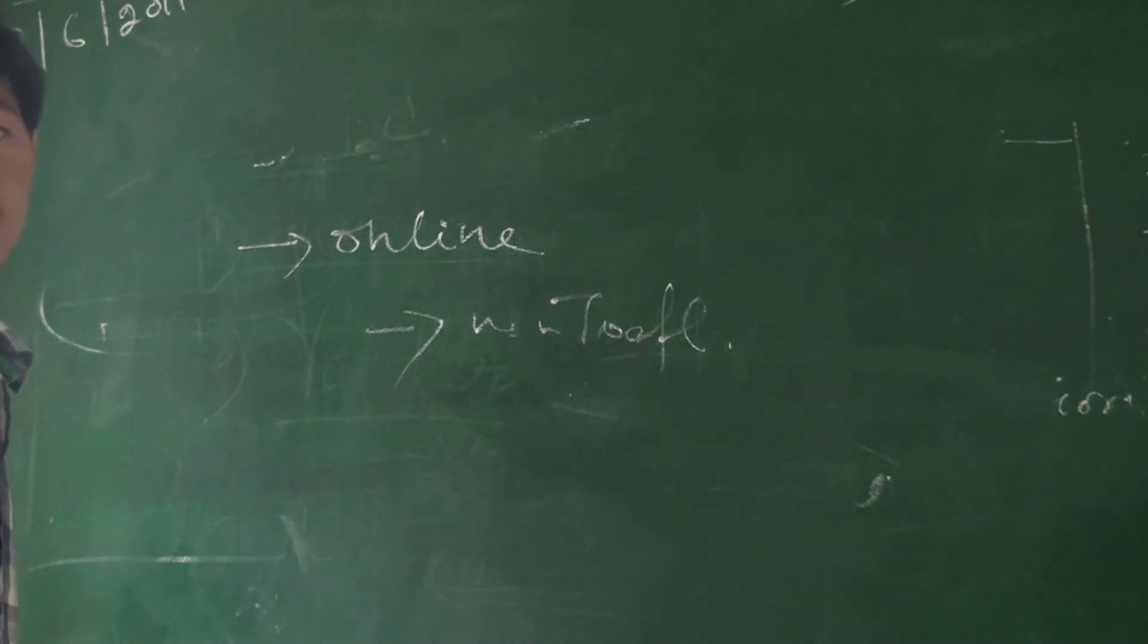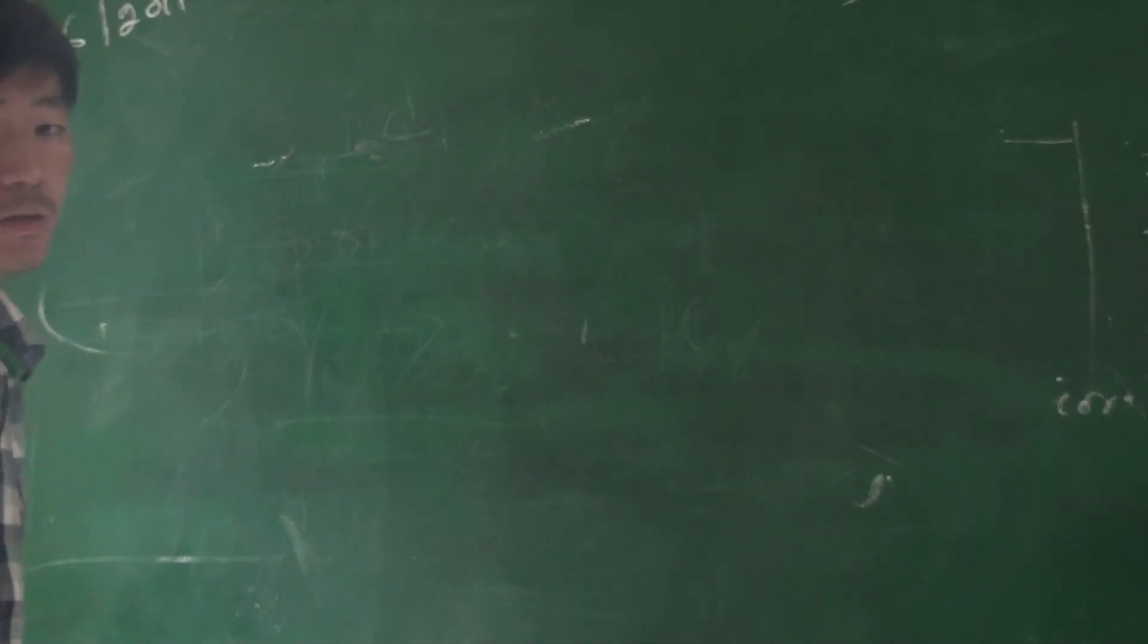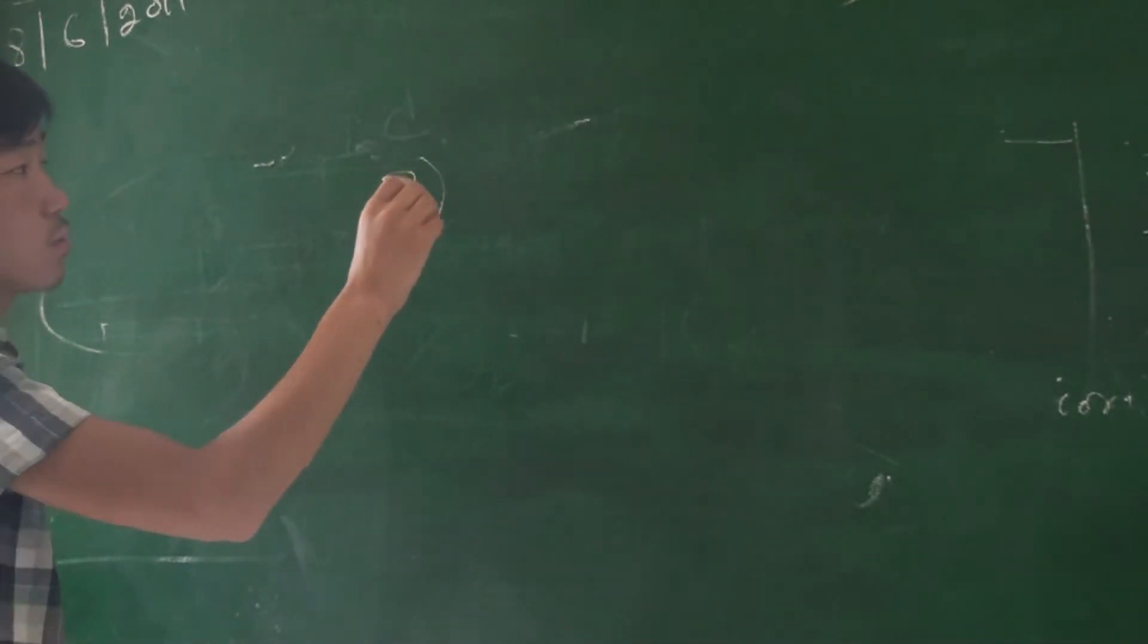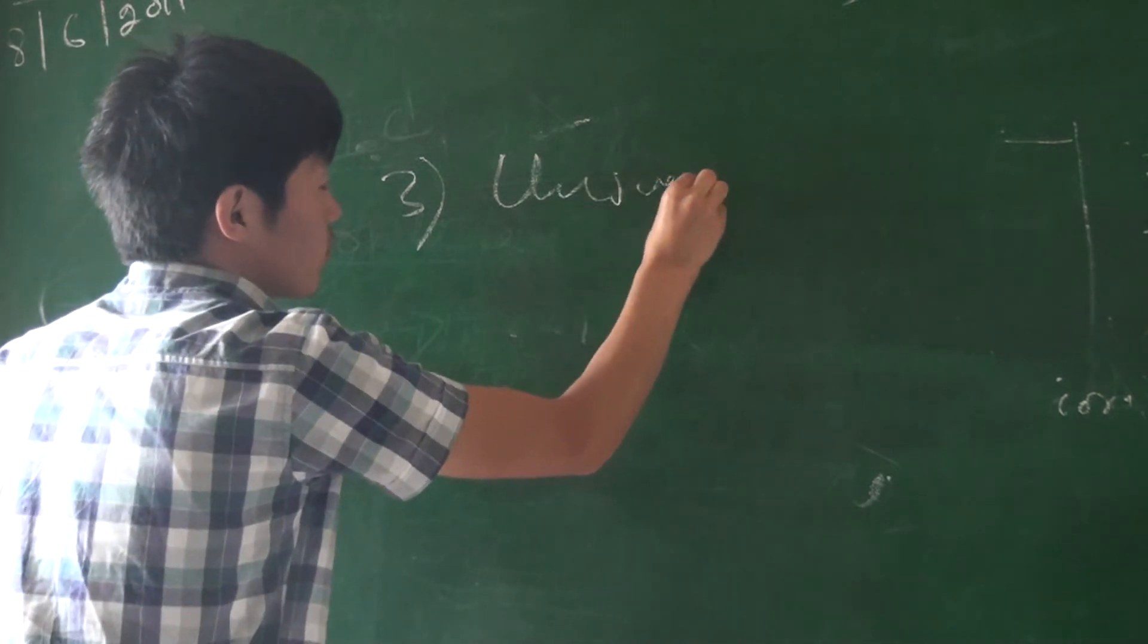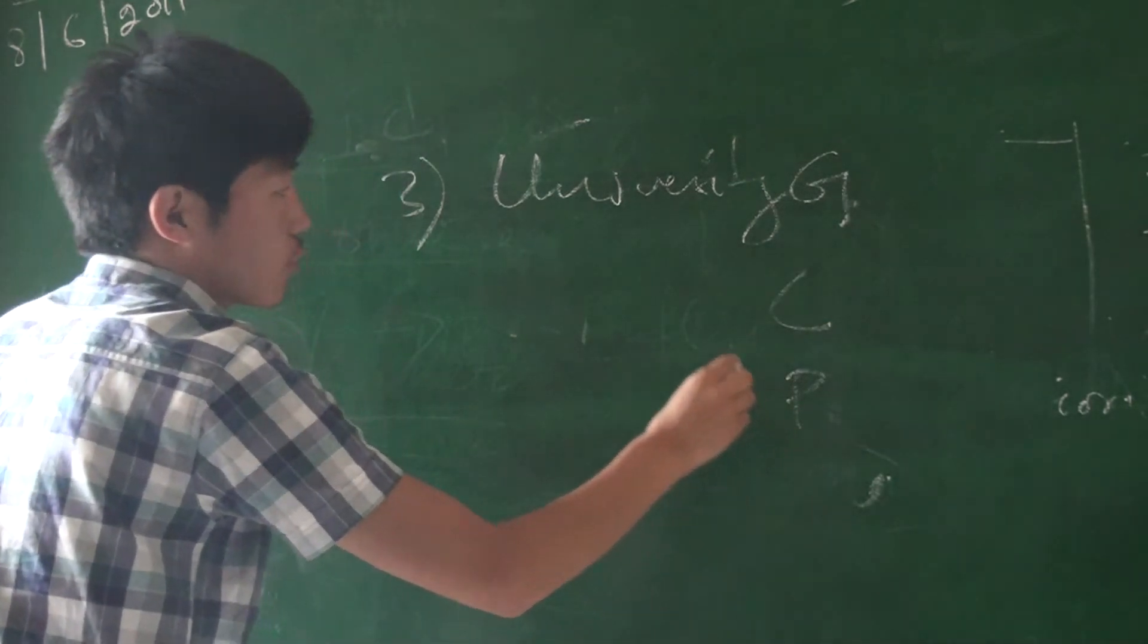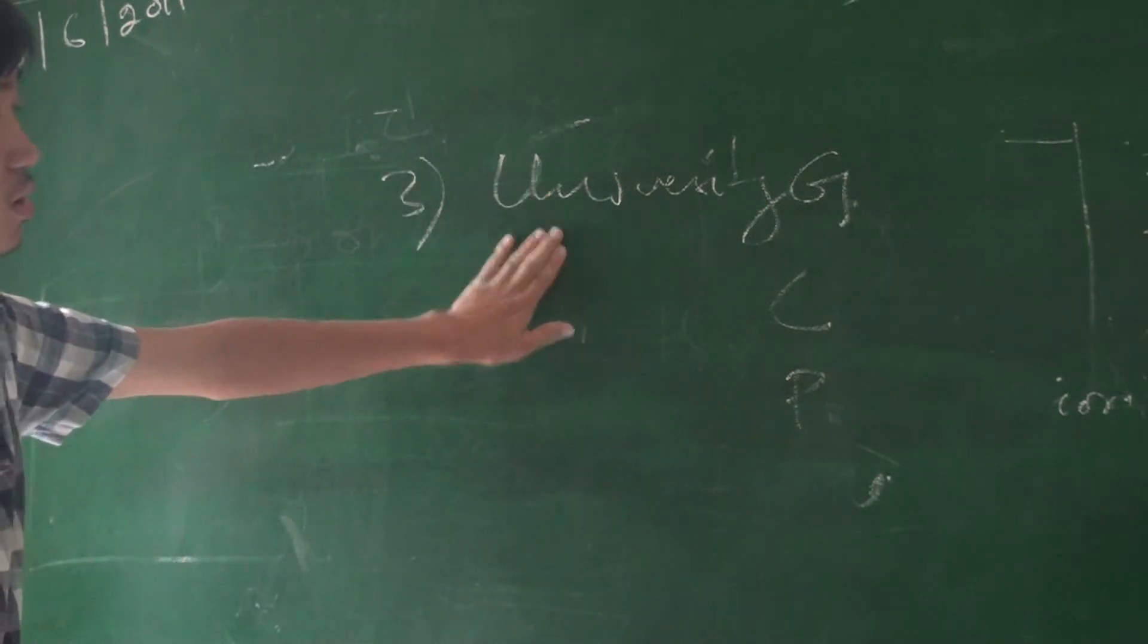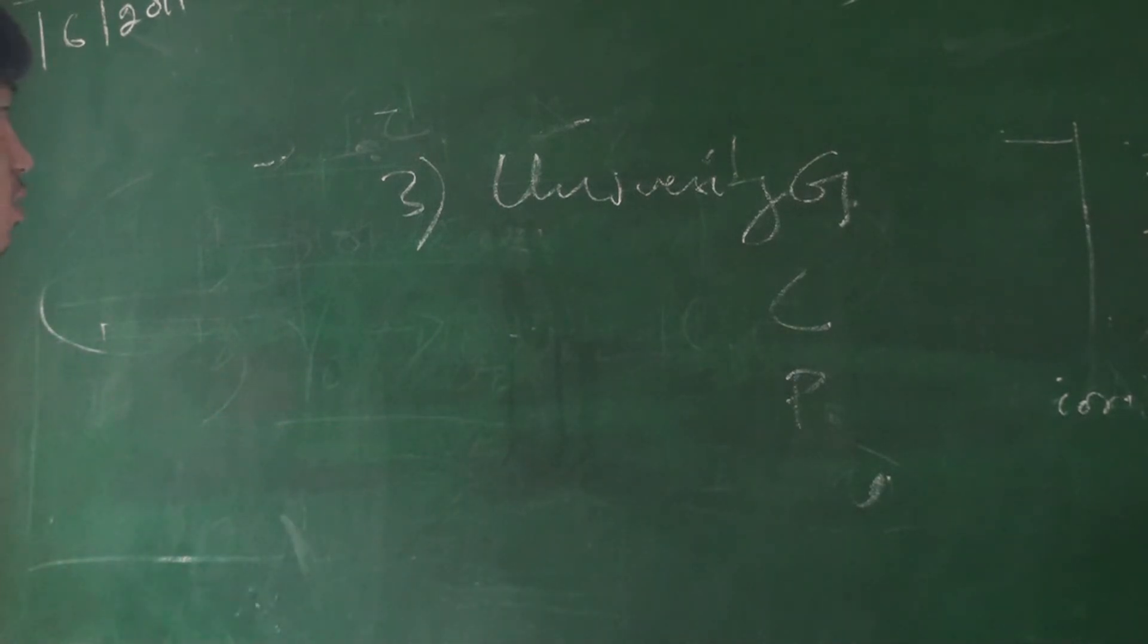When registering, they will send your results to three universities or three colleges for free. If you are intended to apply to universities like Georgetown, Chicago, or Pennsylvania, and you want to send your TOEFL score to three universities, they will automatically send your score to three universities. If you want to send your score to more than three universities, then you have to pay an extra fee.